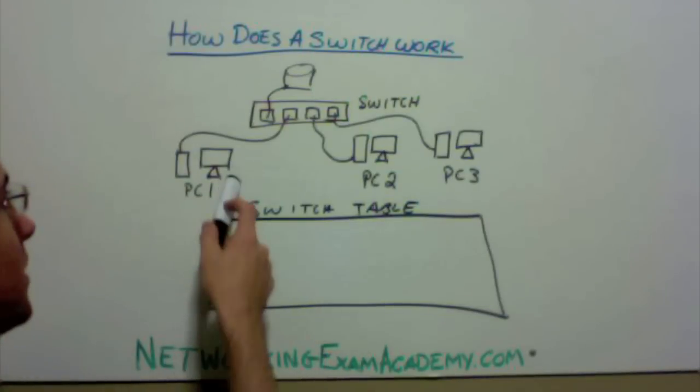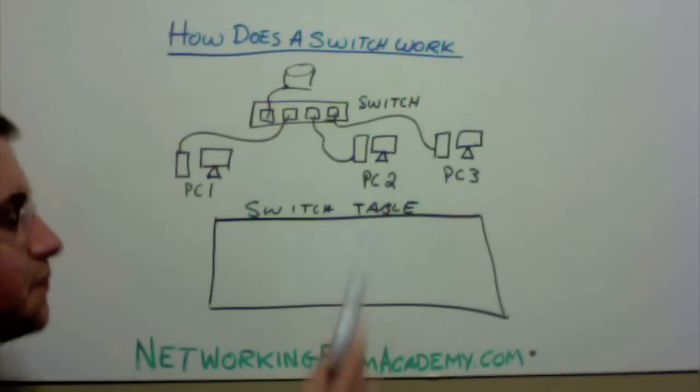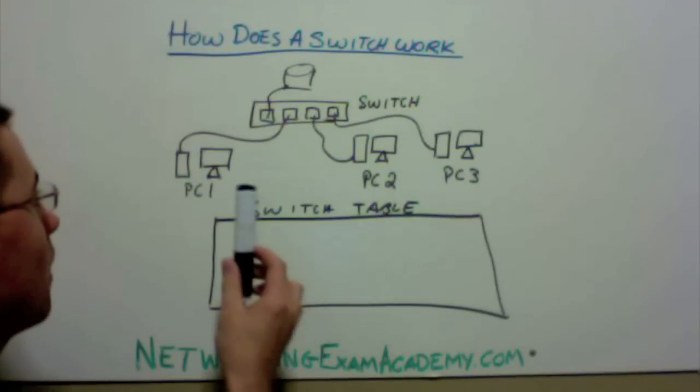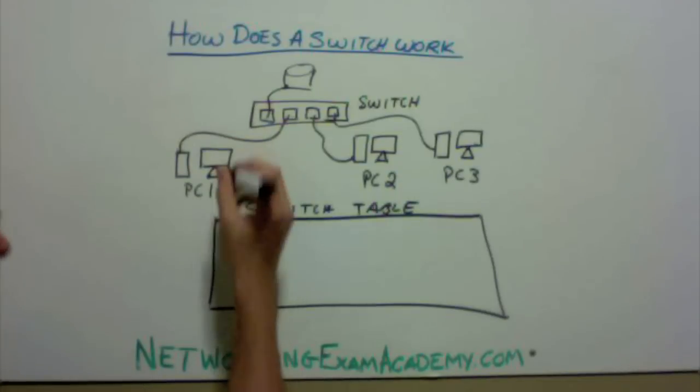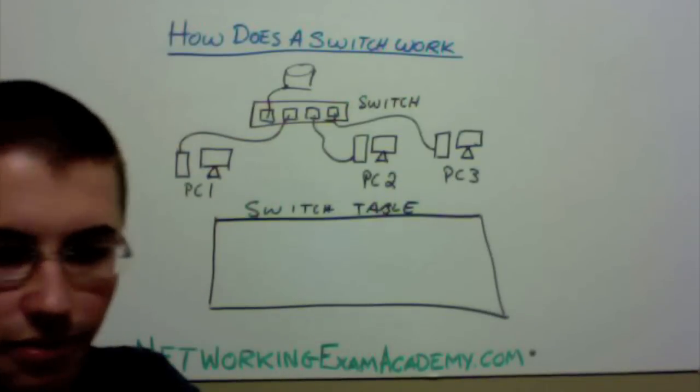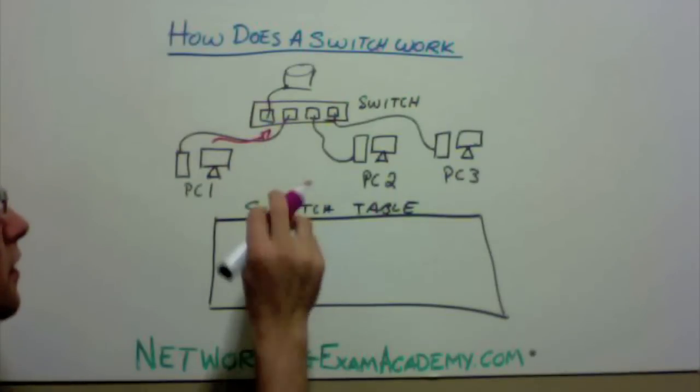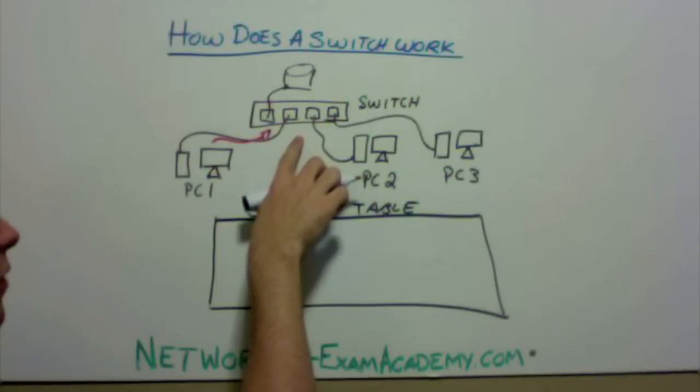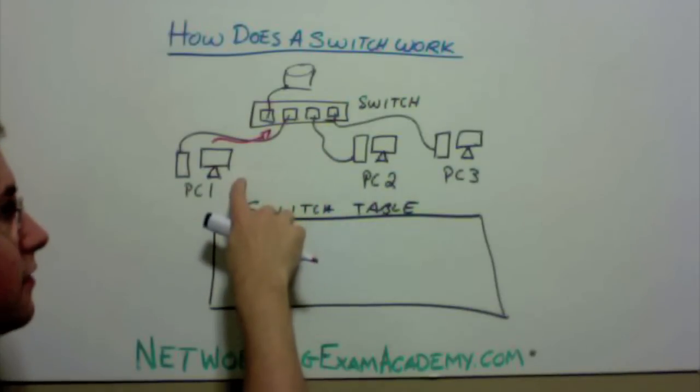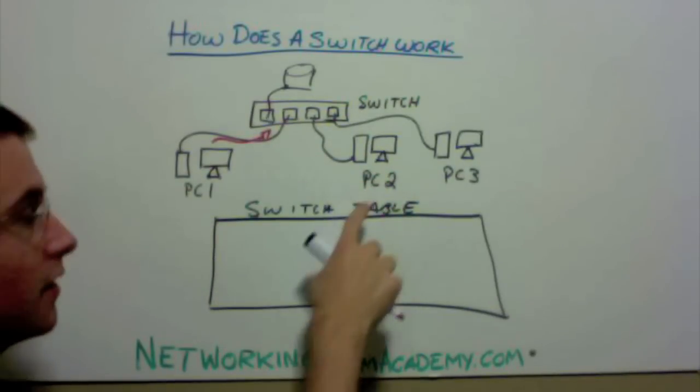Let's say PC1 wants to send some data to PC2. PC1 is going to send a frame on the network with his MAC address with the destination MAC address of PC2.